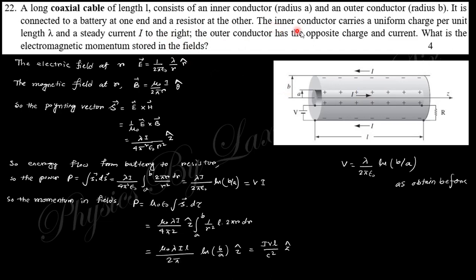The inner conductor carries uniform charge per unit length λ and current I to the right. The outer conductor has opposite charge and current—this is positive, so this must be negative.